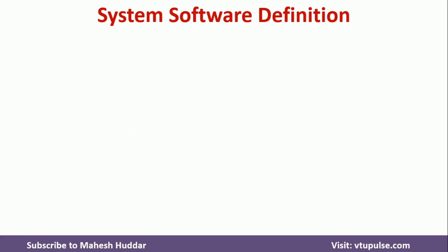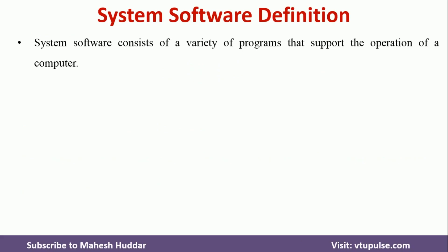First, we will see what is the definition of system software. System software consists of a variety of programs that supports the operation of a computer. Whenever we buy a new hardware — maybe a mobile or a computer — we cannot use that hardware directly. We need some sort of software which helps us to use that particular hardware. That is the main task of system software.